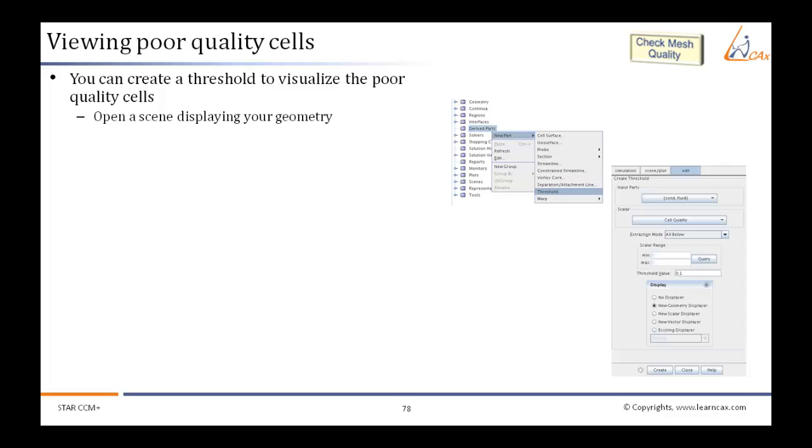How do we view such poor quality cells? You can create a threshold to visualize the poor quality cells. Threshold means some limit which is or is not qualified by the mesh cell. It is like a quality assurance.